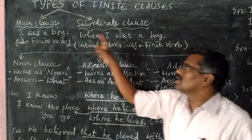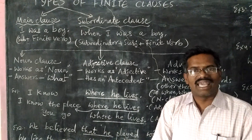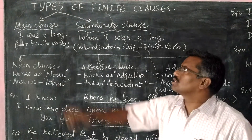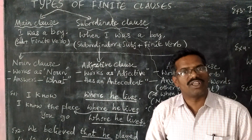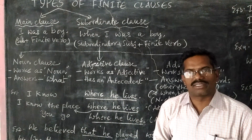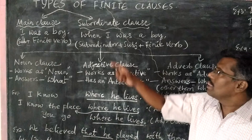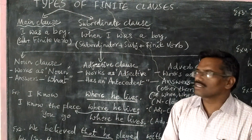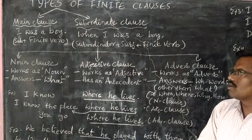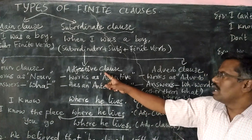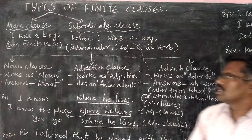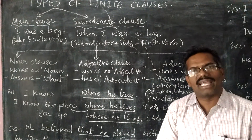So the difference between main clause and subordinate clause is the only existence of a subordinator before a clause. If you want to know more, a separate video was made on main clause and subordinate clause. Now, the types of subordinate clause — there are three important types: noun clause, adjective clause, and adverb clause. All these three clauses are subordinate clauses.